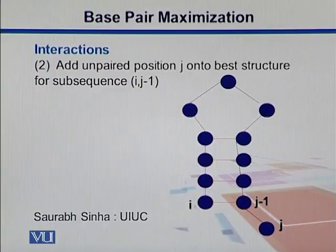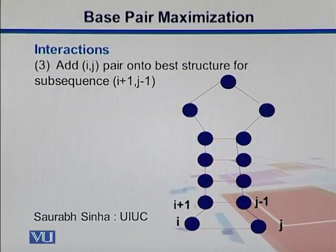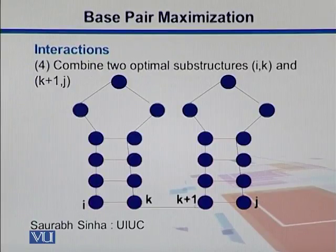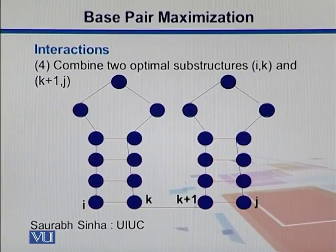In the second scenario, we add an unpaired position j onto the best structure for i and j-1. A third scenario is where i and j are actually paired, and the structure i+1 to j-1 is already there, so we add this pair into that. In another scenario, we can combine two optimal structures where one structure is i through k and the other is k+1 through j — this is where we have a bifurcation.